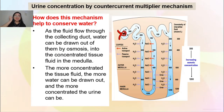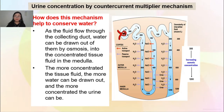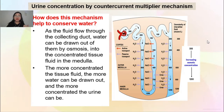How does this mechanism help to conserve water? As the fluid flows through the collecting duct, water will be drawn out via osmosis into the concentrated tissue fluid in the medulla. Because of the difference in concentration, water will just flow out via osmosis. The more concentrated the tissue fluid, the more water that can be drawn out, and the more concentrated the urine will be.